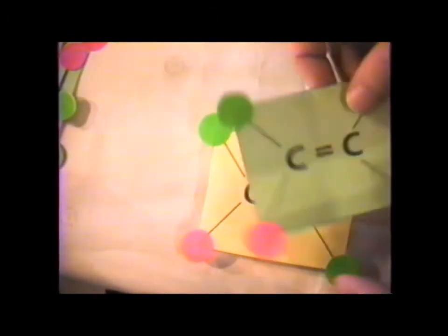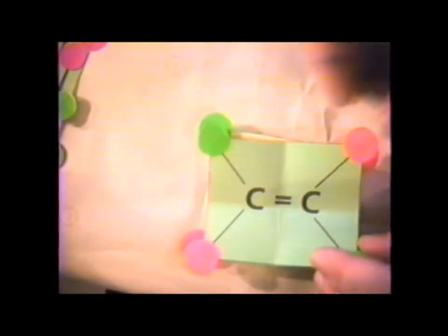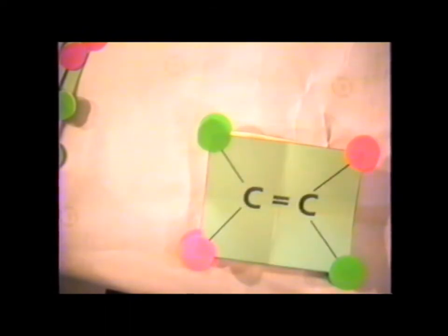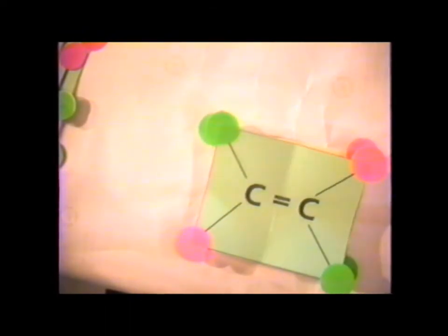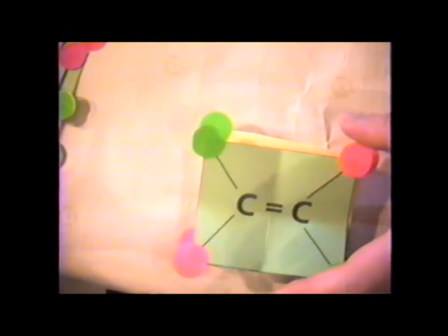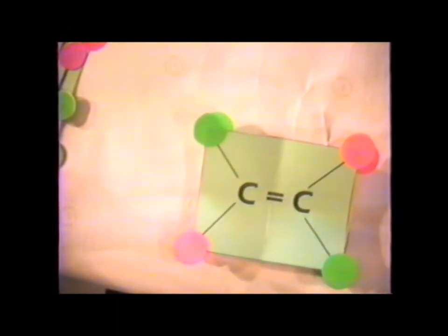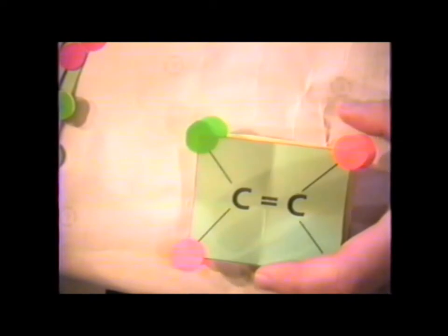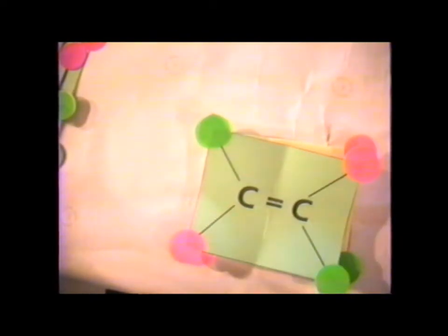So we have an interesting set of symmetry operations for this particular point group. It's a group called C2H — H for horizontal mirror, not C2V, which is a very common point group. It has the identity, which all of them do. It has a C2 operation. It has a horizontal mirror and has one additional symmetry operation, which we are going to demonstrate, called inversion.